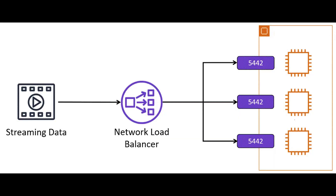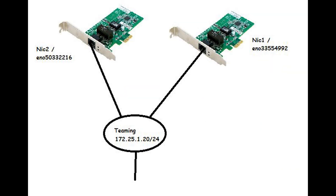Next, let's talk networks. We have network load balancers, which take the load and distribute it among various resources, providing fault tolerance and very fast convergence. Then we have network interface card teaming, a common method of grouping physical network adapters to improve performance and redundancy. The primary advantages of NIC teaming are load balancing and failover without the requirement for multiple physical connections.